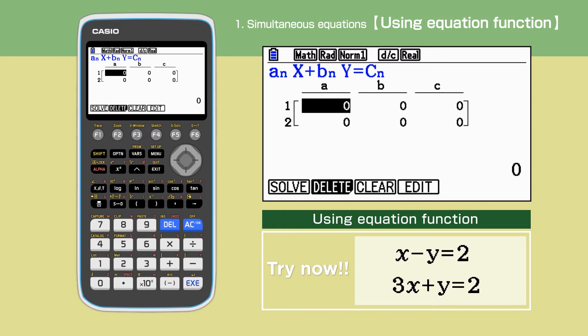If the equations are not in AX plus BY equals C form, then we will need to rearrange the equations. This is not the case for our example.